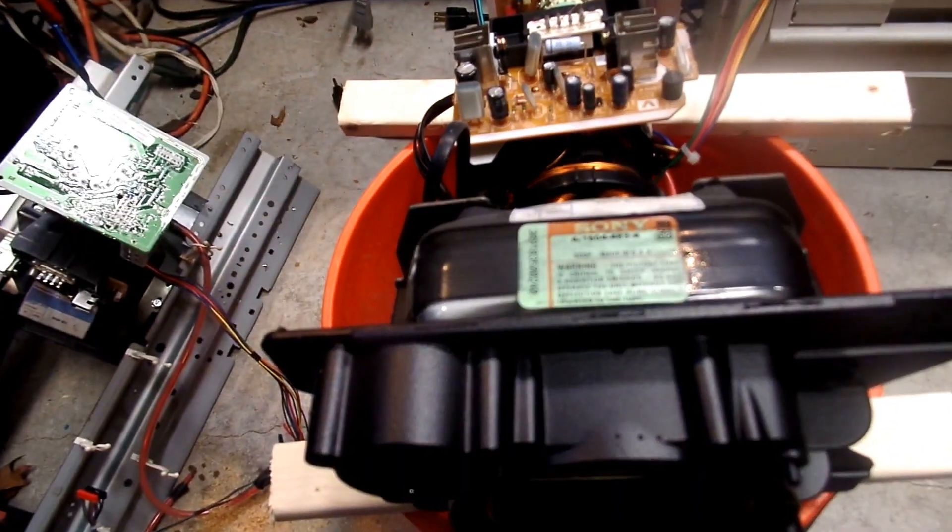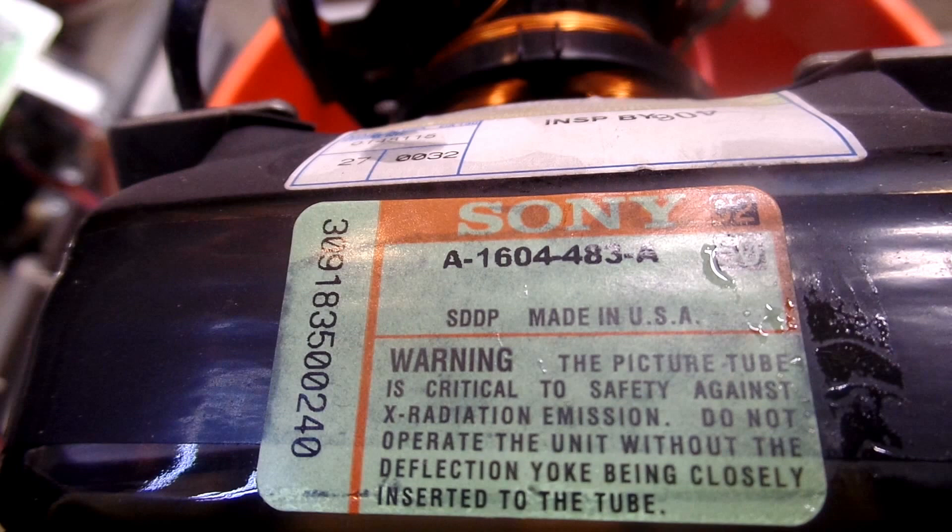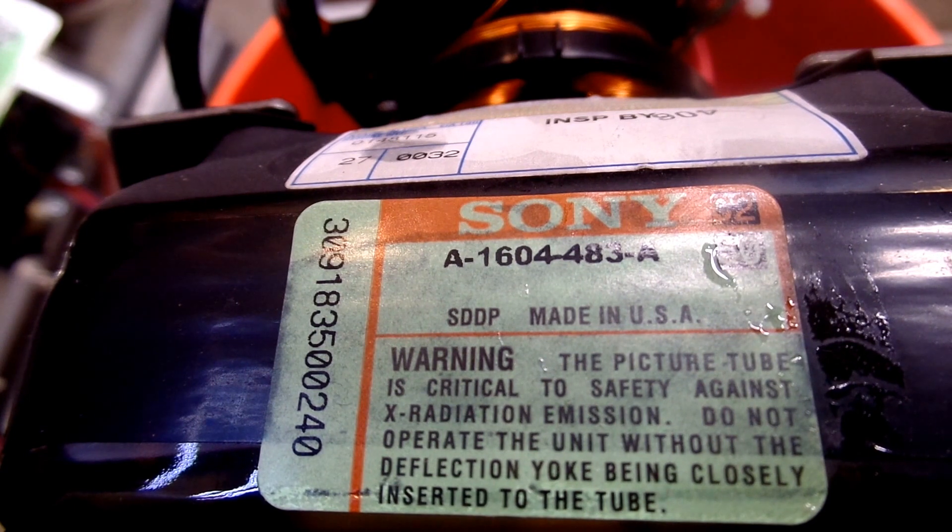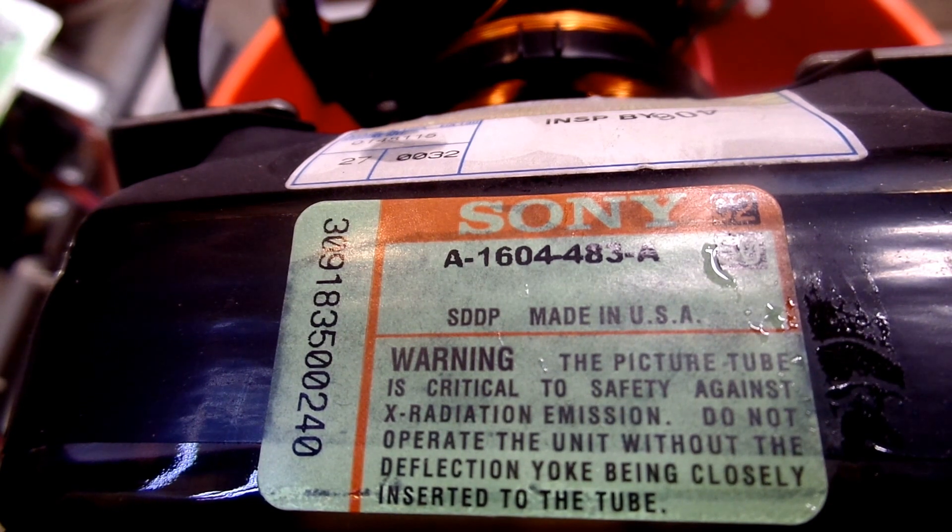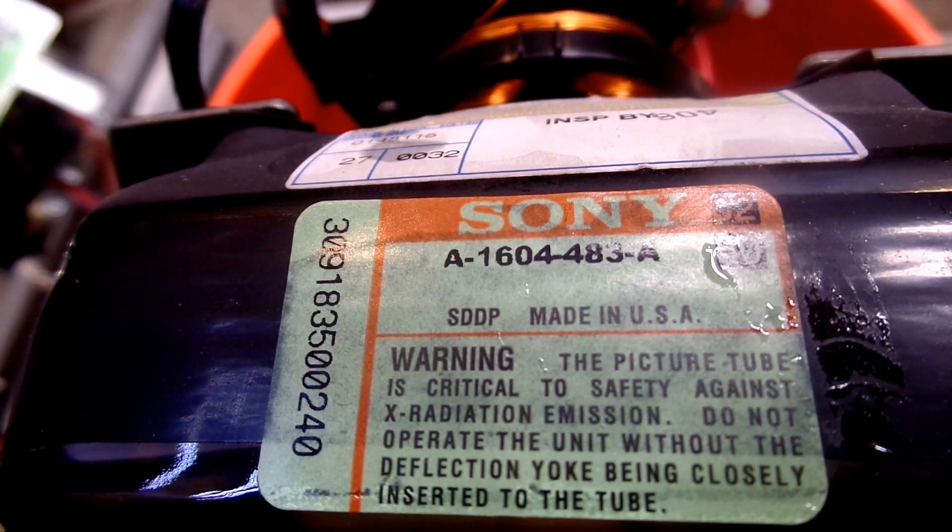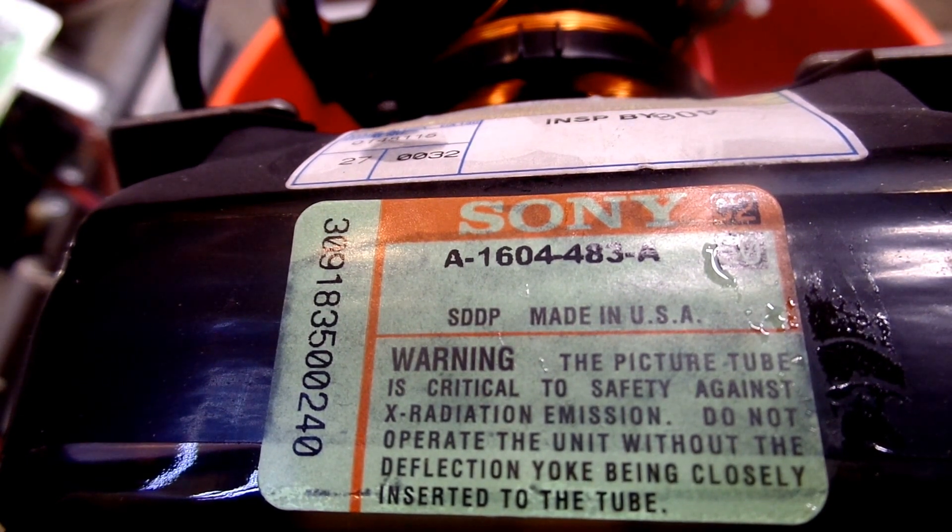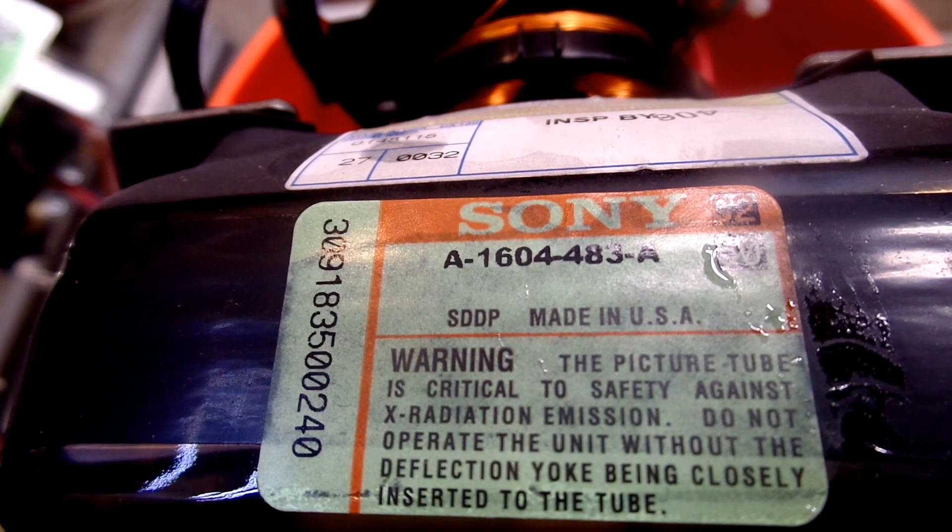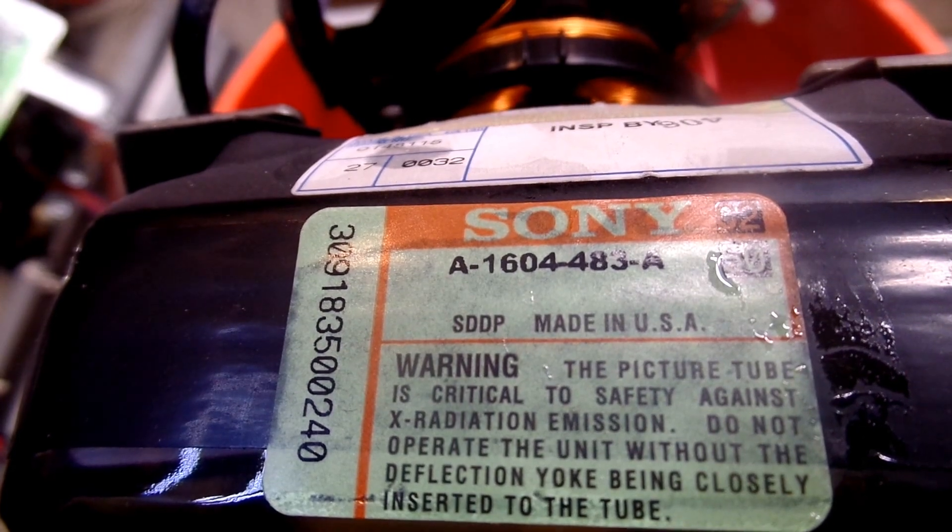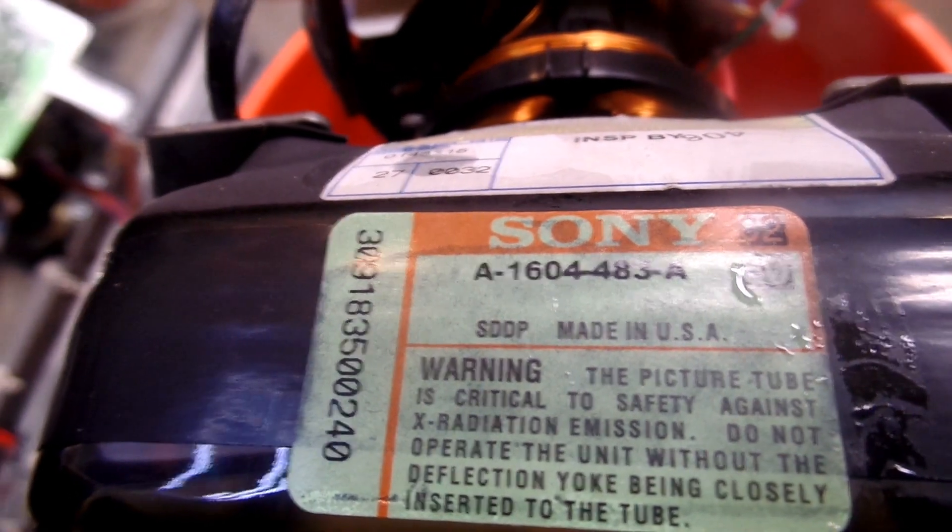Okay, I'm gonna zoom you in. Okay, I gotta zoom in on that warning message. It says, This warning, the pitcher tube is critical to safety against x-radiation emission. Do not operate the unit, the deflection yoke, without the deflection yoke being closely inserted to the tube. Well, I think we just took the deflection yoke apart. So, I guess there's no more operating this machine without irradiating myself. Which is good because I had no plan on irradiating myself anyways.